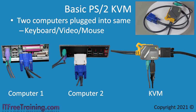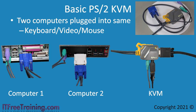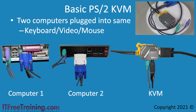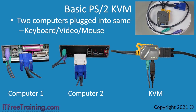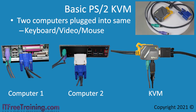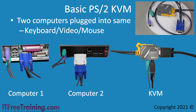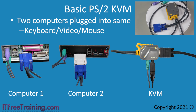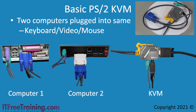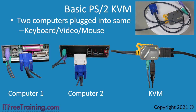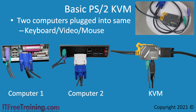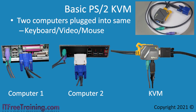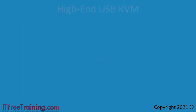These KVMs use electronics to change which computer is selected rather than switching wires. The electronics will emulate a keyboard, video and mouse so when the computer is starting up it will think it is connected to one, even when it is not selected on the KVM. Some KVMs, however, either do a poor job of emulating or don't do it at all. If you have one of those KVMs, you may still need to have the KVM selected when you switch the computer on. This shows the basic features, however some KVMs come with more features.